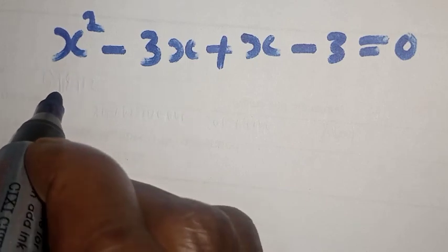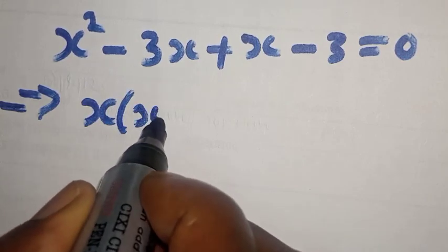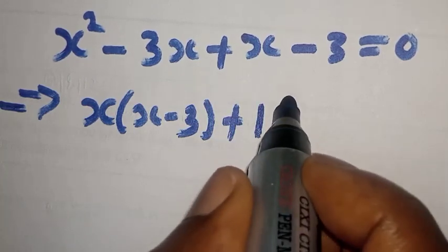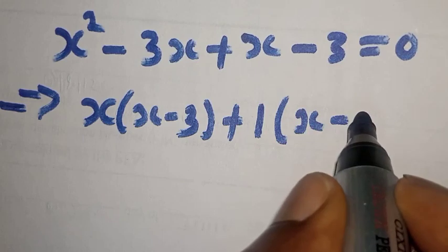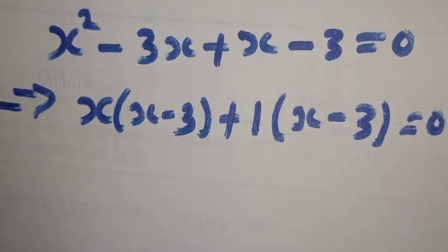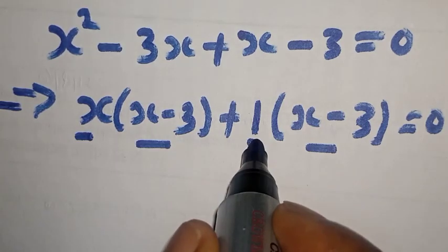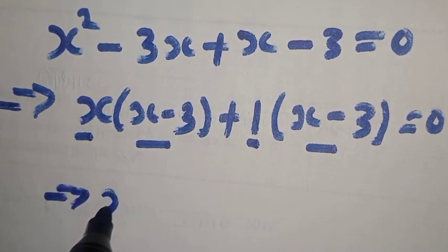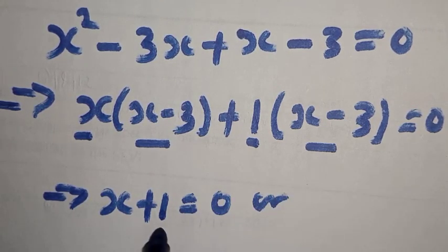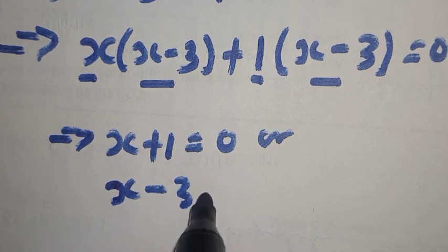Let's solve by the factorization method. This can be written as s squared minus 3s plus s minus 3 equals 0, which gives us s times (s minus 3) plus 1 times (s minus 3) equals 0.